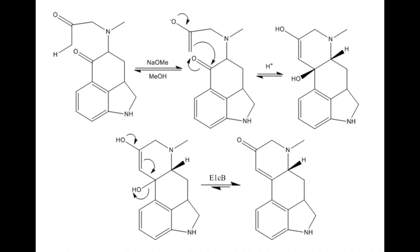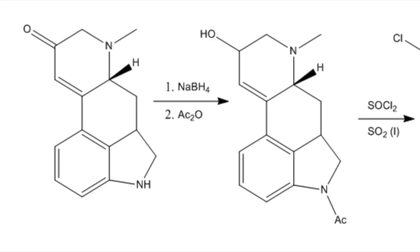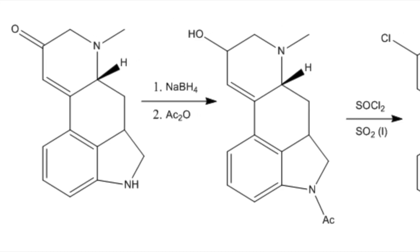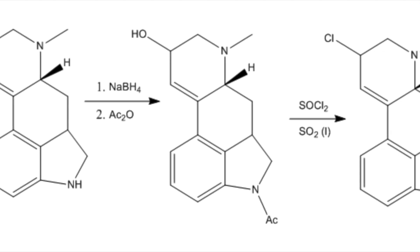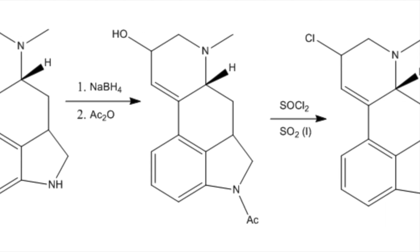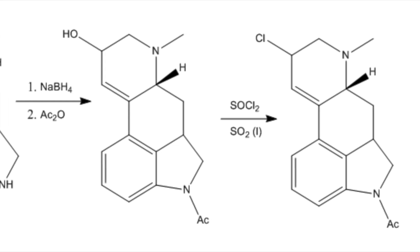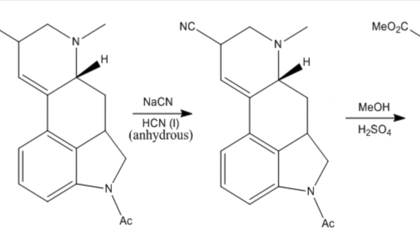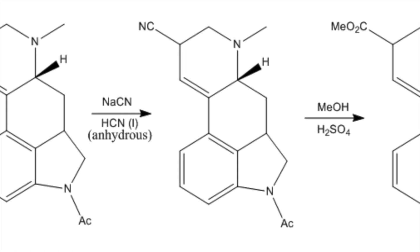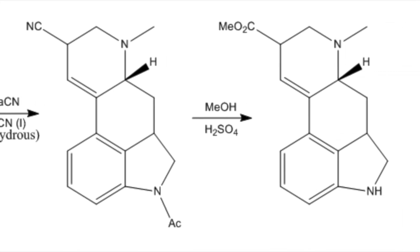This is immediately followed by an elimination reaction to give a ketone. Subsequently, the compound is treated with sodium borohydride to reduce the ketone to an alcohol. Then, SOCl2 is added to replace the alcohol group. The compound is then treated with sodium cyanide and then with methanol and acid to form a methyl ester.